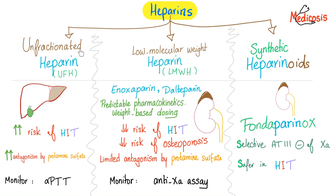Heparins are divided into three subtypes: unfractionated heparin, low molecular weight heparin, and synthetic heparinoid. Unfractionated heparin is just called heparin. Low molecular weight includes enoxaparin and dalteparin. Synthetic heparinoid is fondaparinux — so good if the patient has a risk of HIT. Unfractionated heparin is metabolized in the liver, therefore if the patient has liver failure, do not give them unfractionated heparin. Increased risk of HIT — heparin-induced thrombocytopenia. And there is increased antagonism by protamine sulfate — protamine sulfate is an excellent antidote for the unfractionated heparin, not so much for the low molecular weight.